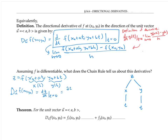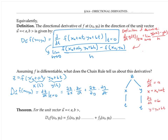Now dx/dt is just a, because x is x₀ + at, and x₀ and a are constants while t is our variable. Similarly, dy/dt is just b. So we can rewrite dx/dt as a and dy/dt as b. But ∂z/∂x is just the derivative of f with respect to x, so that can be written as f_x. Similarly, ∂z/∂y can be written as f_y.